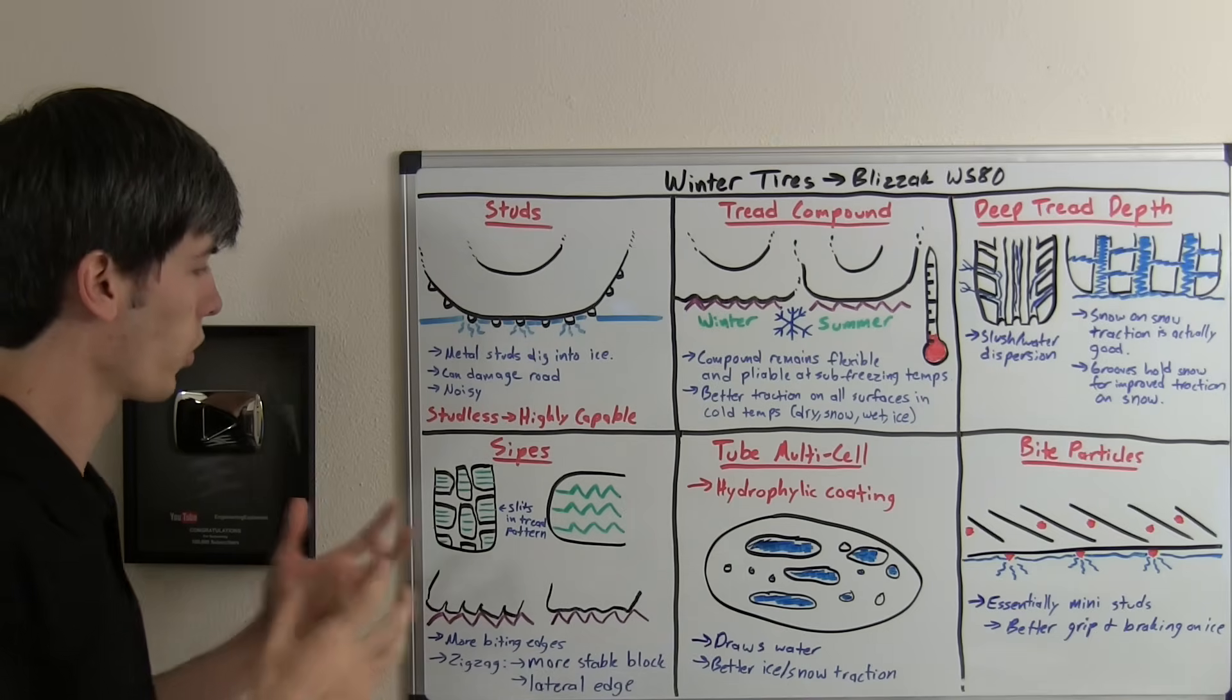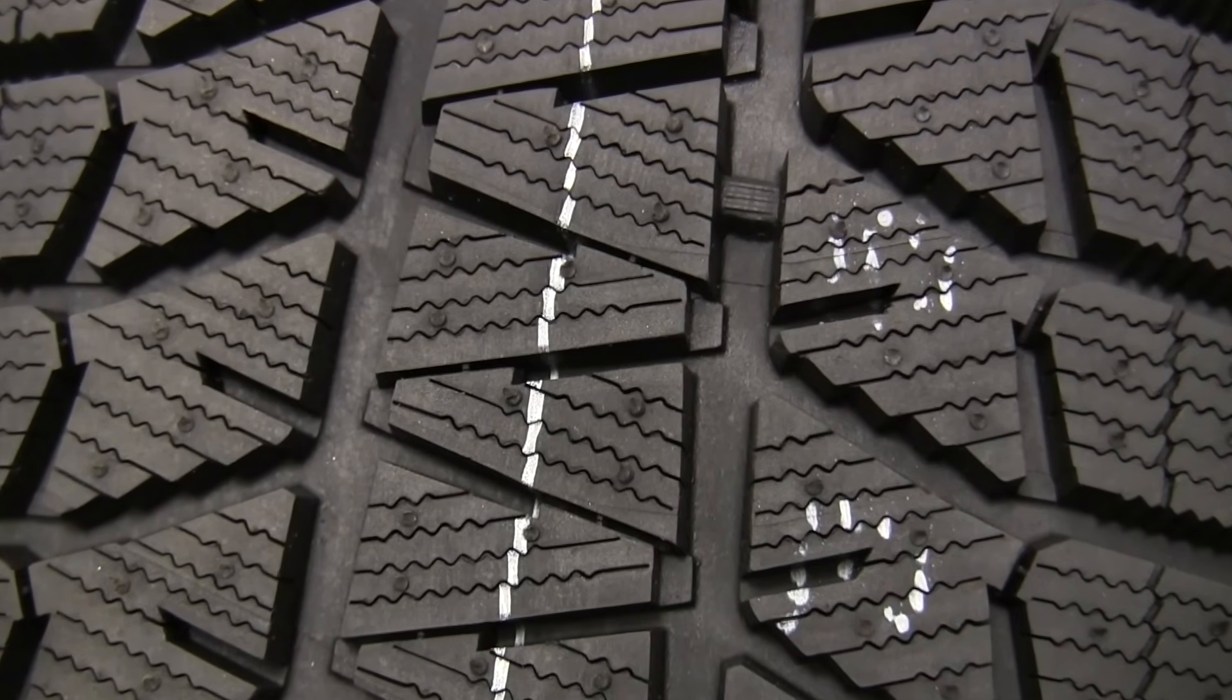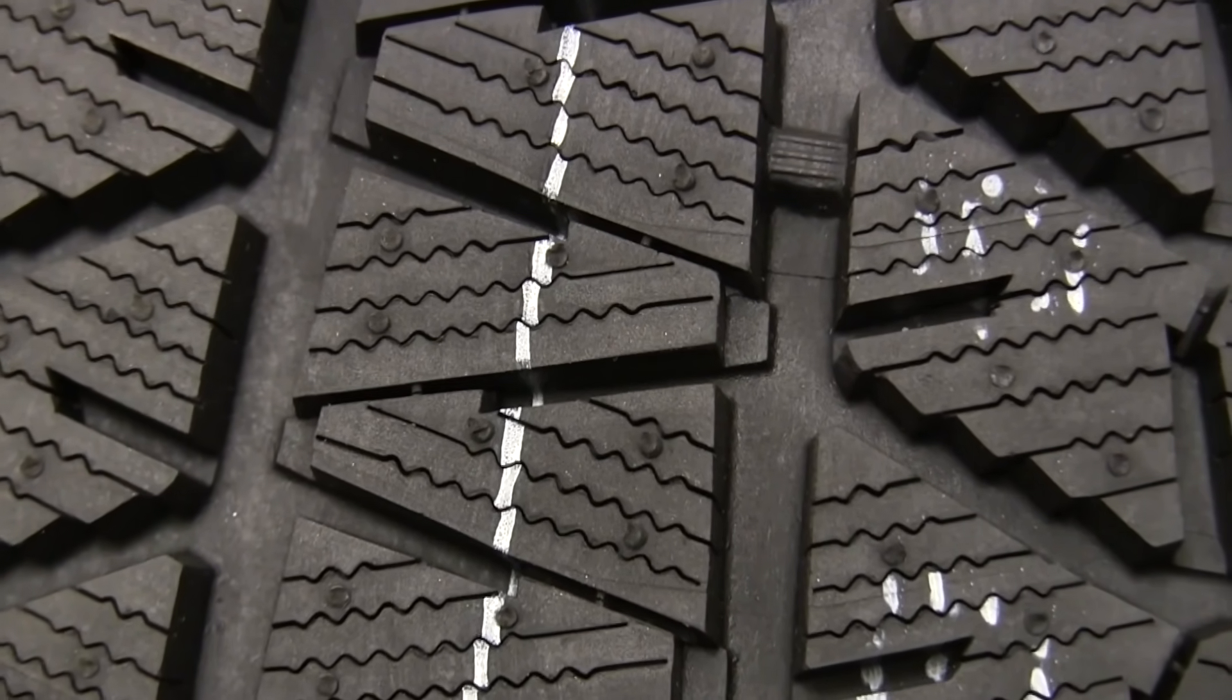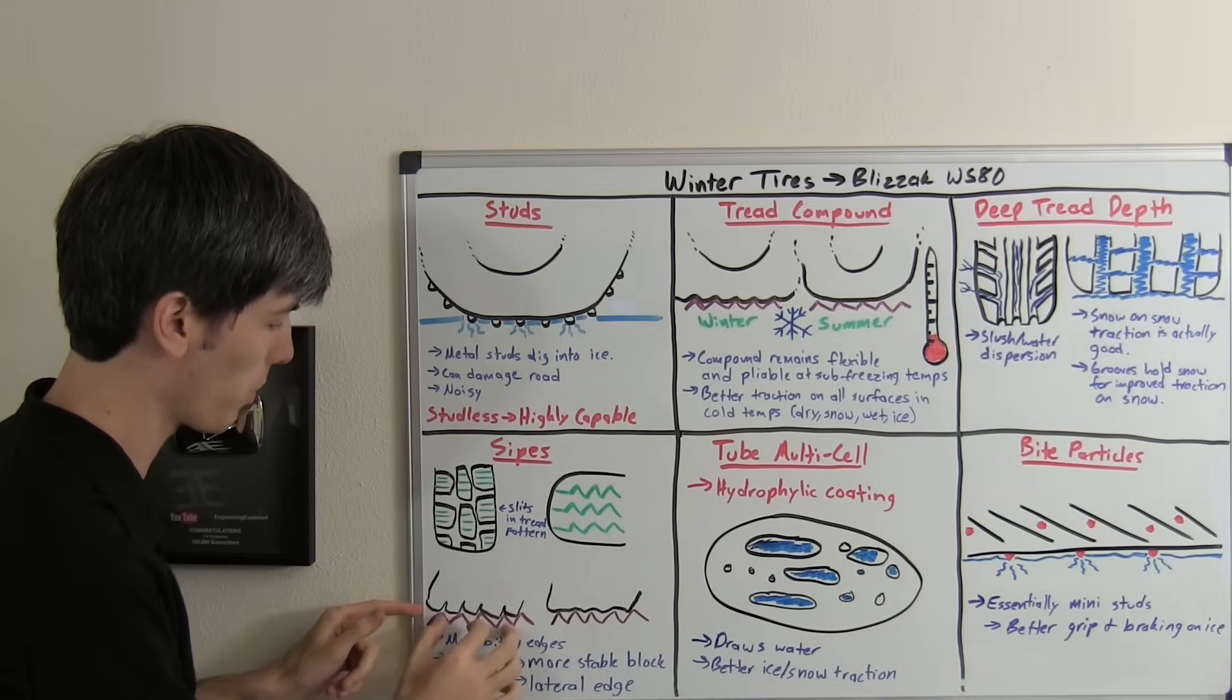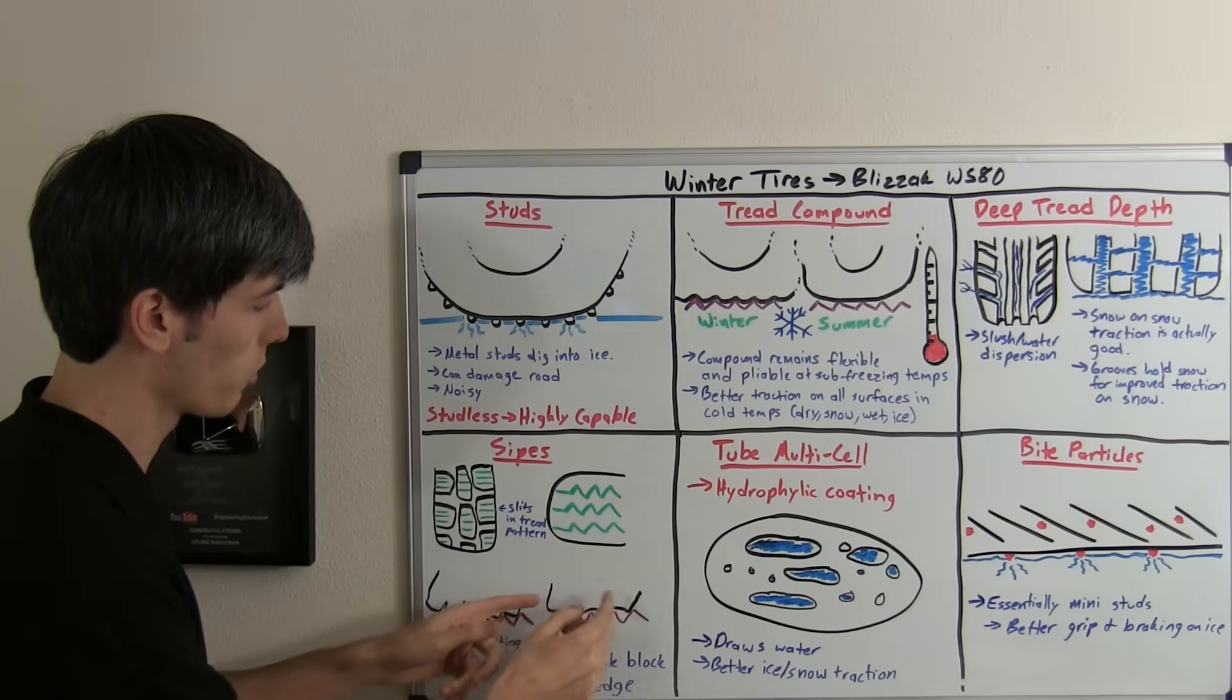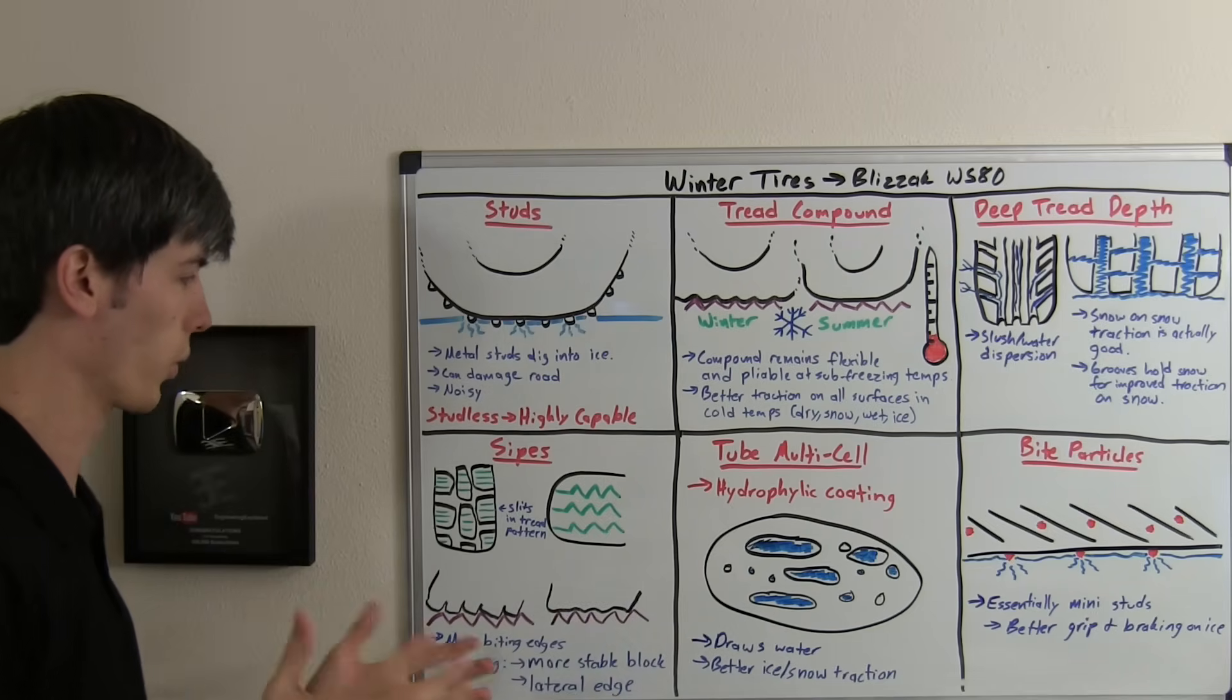Now on to siping. Sipes are little slits that are within the tread pattern on the different blocks. Basically what these do is they provide a biting edge, and they provide more biting edges for the tire to grip onto the road. You're going to have these surface irregularities in the road, and these different biting edges are going to help grip against those irregularities, versus if you just had a flat smooth tread block, then it's only going to have one leading biting edge and then it's going to have to rely on the flexibility of the tire to mesh into those grooves.